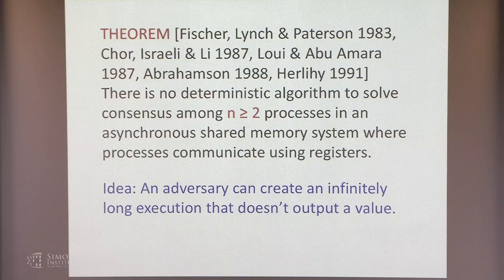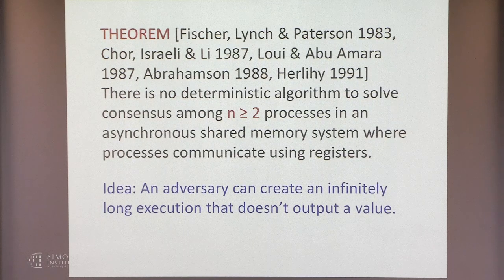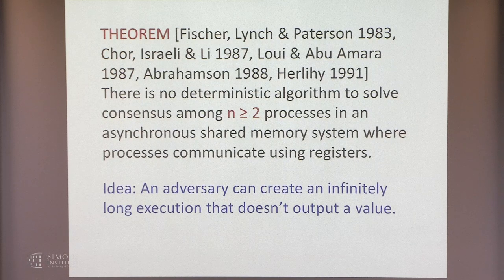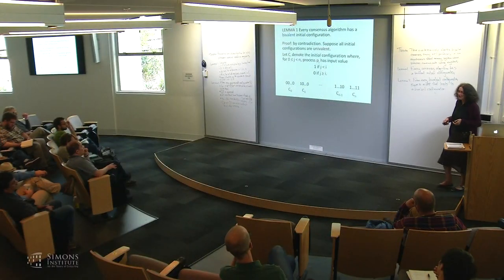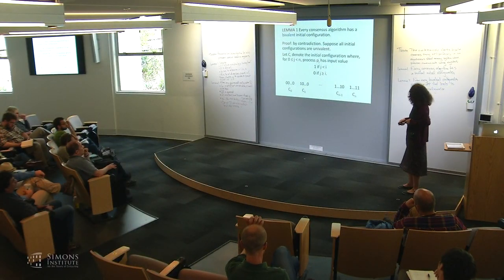The idea of the impossibility result is that an adversary is going to be able to create an infinitely long execution in which no value is output, which would contradict the fact that it solves consensus. We're going to prove two lemmas and then combine them to prove the theorem. The first lemma is pretty easy and doesn't depend on the model of computation.